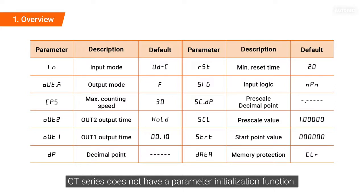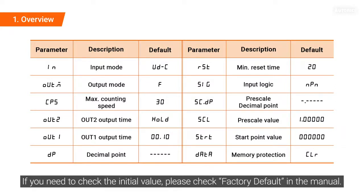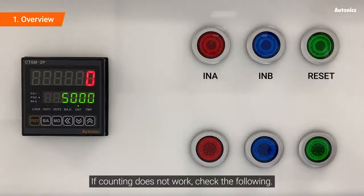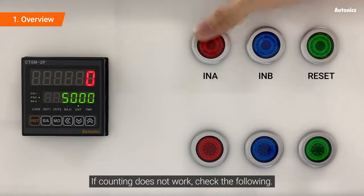The CT series does not have a parameter initialization function. If you need to check the initial value, please check factory default in the manual. If counting does not work, check the following.